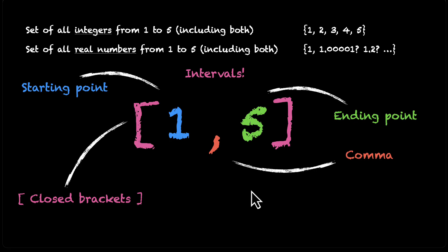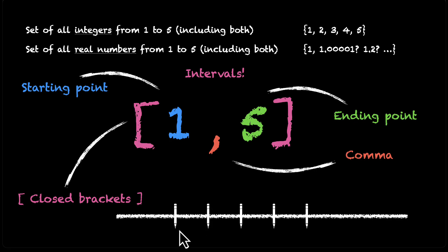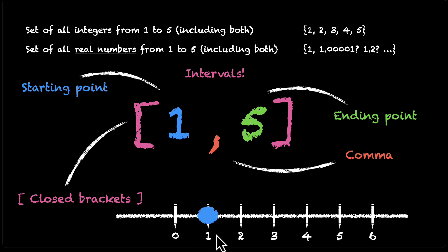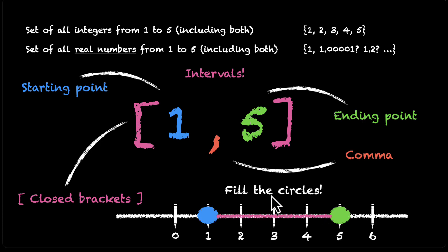And that's not it — you can even visualize this on the number line. You draw the number line and put in the points. Your starting point is 1, so you circle 1, and your ending point is 5, so you circle that as well and join both of them from 1 to 5. Because we're including both 1 and 5, don't forget to fill these circles.